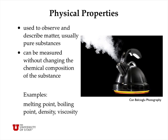Physical properties are used to observe and describe matter. We typically measure the physical properties of pure substances, though tabulating properties of mixtures is also useful. Physical properties can be measured without changing the chemical composition of the substance. Examples include melting point, boiling point, density, and viscosity — these can usually be looked up in tables for any particular substance.